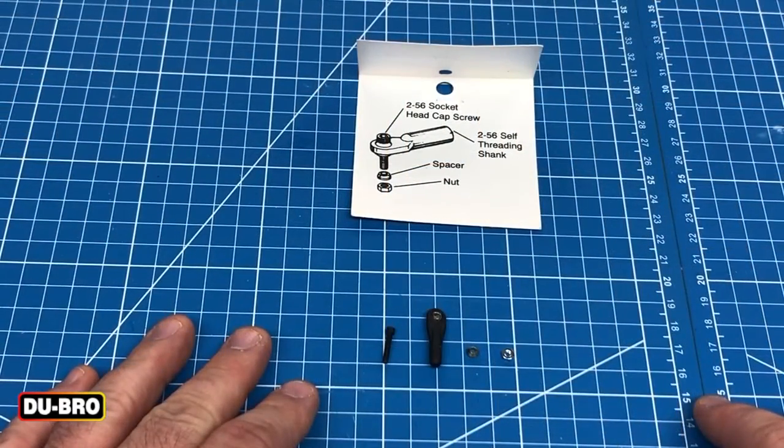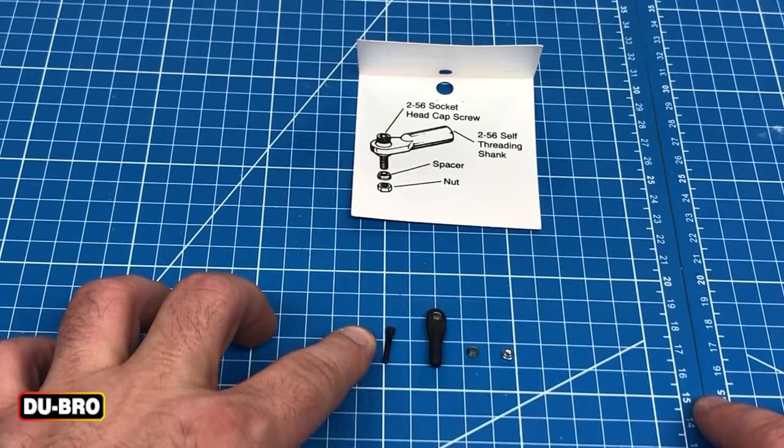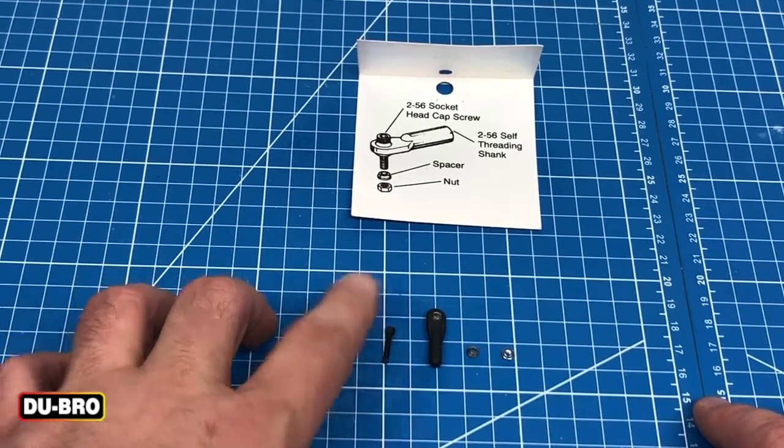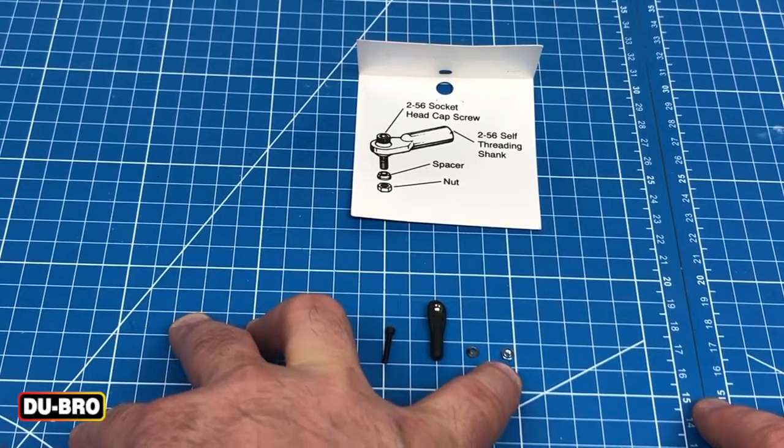The four main pieces for the swivel ball link are a 256 socket head cap screw as well as the swivel ball link itself, a spacer, and an installation nut.